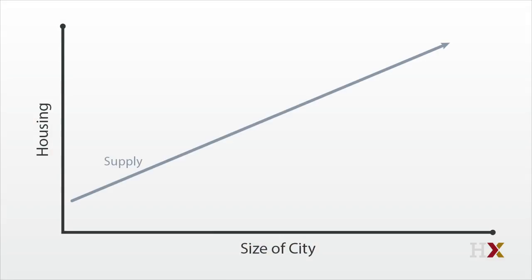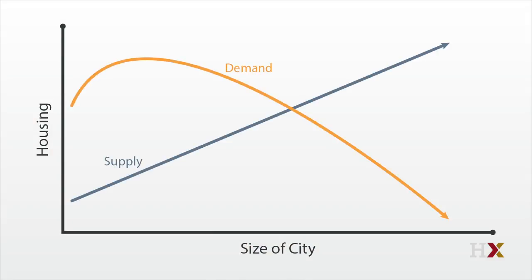But what if the agglomeration economies are strong enough to make demand slope up? There are lots of ways in which demand can slope up that won't matter. For example, what if willingness to pay for the city is greater than supply costs for the first person? Demand then rises a bit with city size, reflecting the agglomeration economies, but still remaining above the cost of providing housing. And then ultimately, demand starts falling and crosses the supply curve. Things look a little funky, but there's still only one crossing point, and everything more or less works like before.